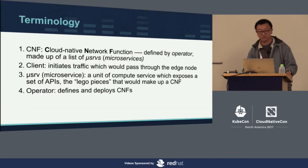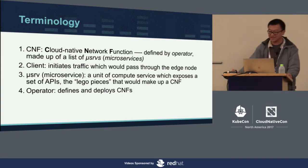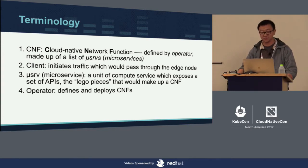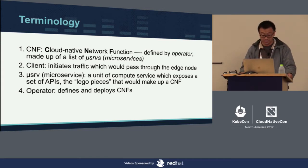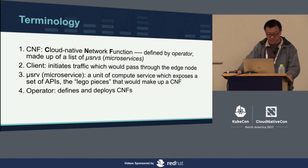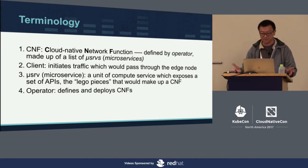Before going into the framework, here are the terminologies: Cloud-native network functions — CNFs — are cloud-native VNFs, defined by the operator and made up of a list of microservices. An operator is the entity that defines and deploys CNFs for clients to subscribe to — willingly or unwillingly — such as IT administrators for enterprise, AT&T or Verizon for mobile, or cloud providers. Microservices are just microservices — they consume compute resources and expose an API. In a CNF, they are like Lego pieces that construct the CNF. Clients are the people who initiate traffic going through the edge node.